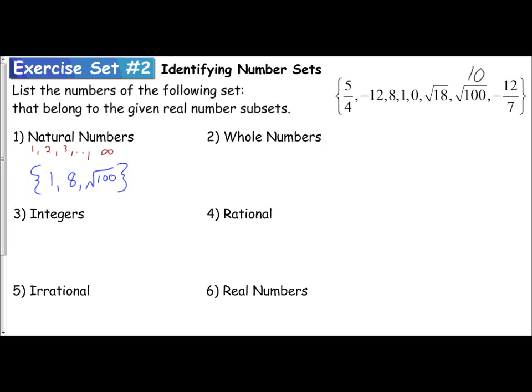Now we go into the whole numbers. Whole numbers start at 0 and then they count up 1, 2, 3. So whole numbers starts at the number 0 and then includes all of your natural numbers, all of your counting numbers. So when I'm making this list of whole numbers, I know my natural numbers have to be included in that list, as well as the number 0. The list of whole numbers starts at 0 and then includes all of my natural numbers: 1, 8, and the square root of 100.